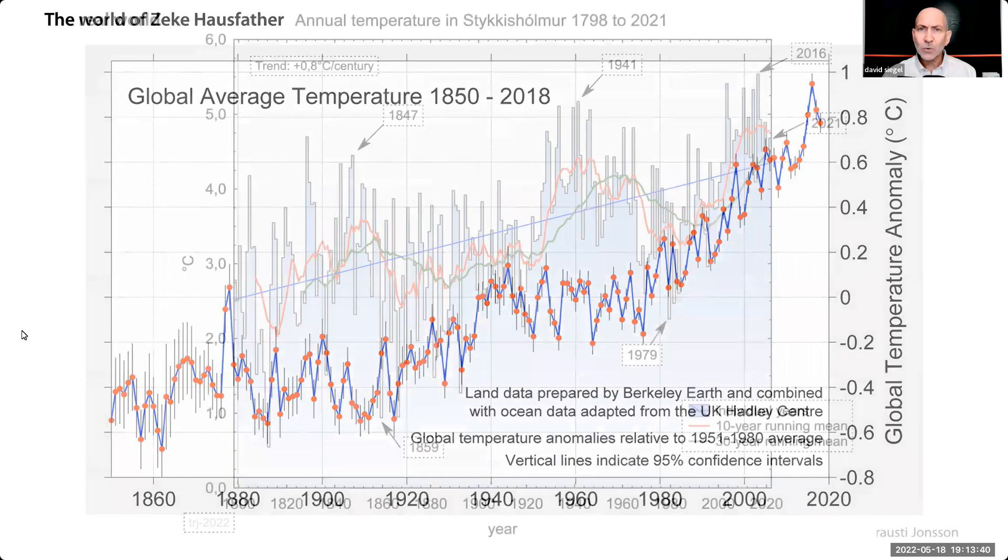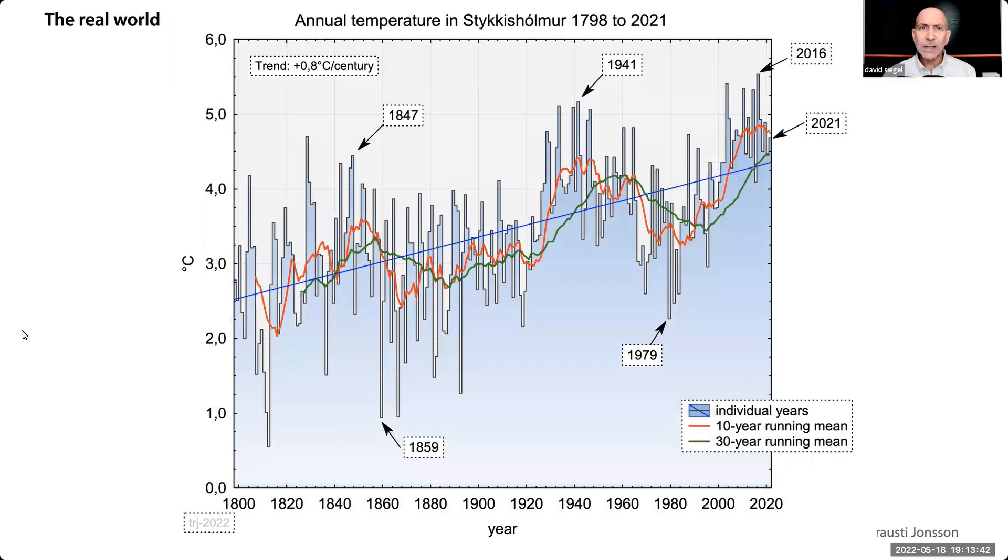Let's look at some other sources. This graph shows data from a remote Iceland station since 1800. It's one of the longest running temperature records in the world that hasn't been influenced by urbanization. Look at the y-axis. 1.6 degrees of warming in 200 years. That's 0.8 degrees per century. This is about as good a proxy for global temperatures as you'll find. Even in Iceland, the 1930s and 40s were almost as hot as temperatures are now.